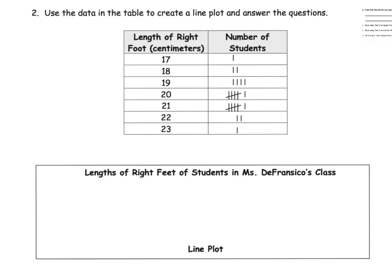The last slide for this video says 'Use the data to make a line plot.' Notice they've removed some scaffolding — they still gave us the title: 'Length of Right Foot of Students in Miss Francisco's Class.' We need to look at our data and see that it starts at 17 and ends at 23.